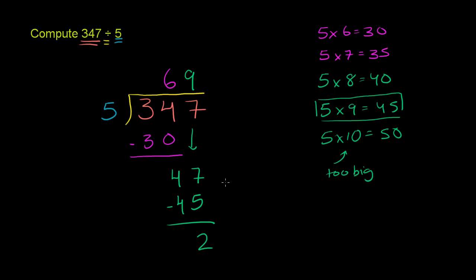And one day we'll learn about dividing into decimals and getting some kind of decimal representation. But we're not going to worry about that right now. We have nothing left to bring down. So 347 divided by 5 is 69.